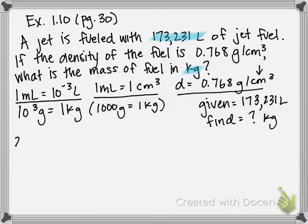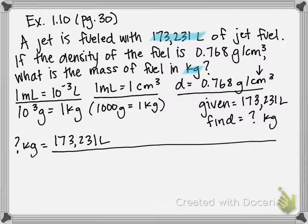Starting out looking for something in kilograms, and I'm given my volume in liters. So first things first, the only conversion factor that I have up here that relates anything to liters is this first guy. One milliliter is equal to 10 to the negative third liters. So first, we're going to have to go from liters to milliliters, then milliliters to centimeter cubed, and then we'll go from there.